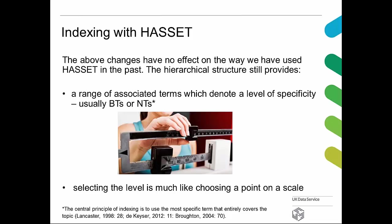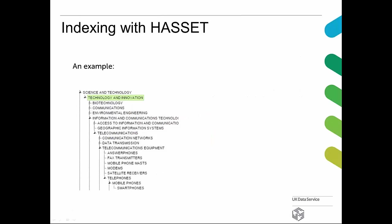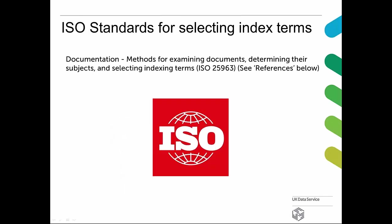Selecting the level is much like choosing a point on the scale. Just to illustrate the new hierarchy again — science and technology — you can see the scale down to mobile phones and smart phones. The flowchart from the ISO standards for selecting index terms provides a helpful guide to follow the process of identifying the need for a new suggestion for the thesaurus.